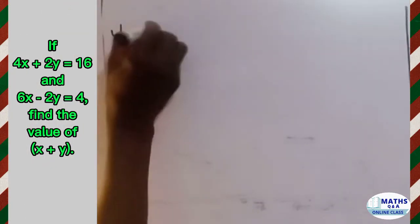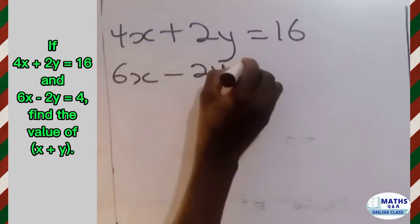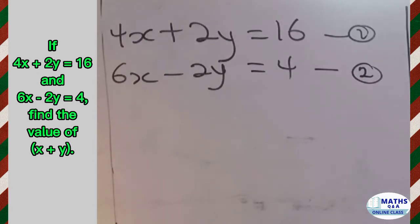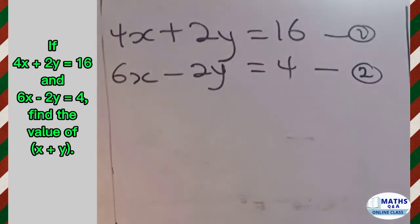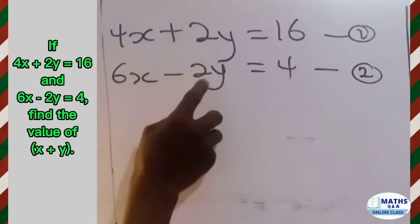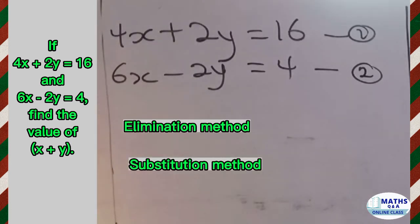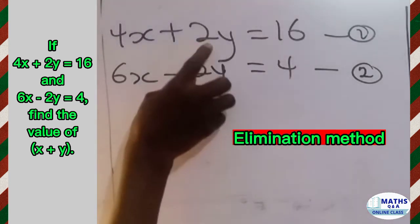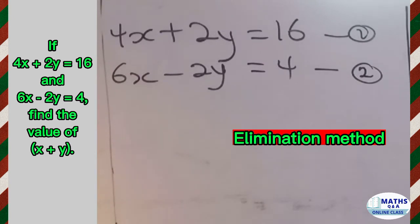We are given 4x plus 2y equal to 16 — call this equation 1 — and 6x minus 2y equal to 4 — call this equation 2. The coefficient of x in these two equations are not the same. The coefficient of y is 2 and negative 2, so they are exact opposites. Considering the question, I am using the elimination method, since the coefficients of y are exact opposites, which means I can solve it quickly.